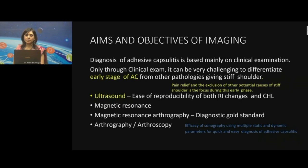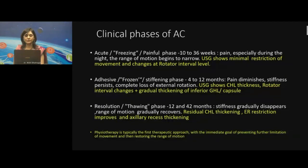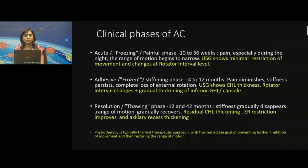Literature reports that adhesive capsulitis progresses through three overlapping clinical phases: freezing (also called the acute or painful phase), adhesive or frozen or stiffening phase, and finally the resolution or thawing phase. As seen from the slide, the time distributions can be very varied and wide, with great overlap between weeks, months, and up to two years. Ultrasound can help differentiate between the three phases and identify any other underlying cause such as fracture, rotator cuff tears, tendinosis, impingements, or subacromial subdeltoid bursitis.